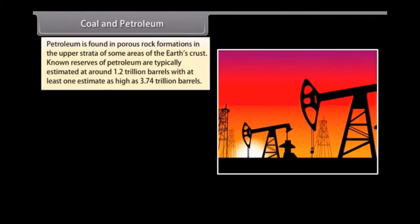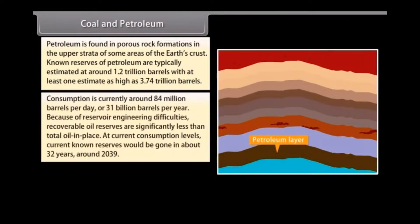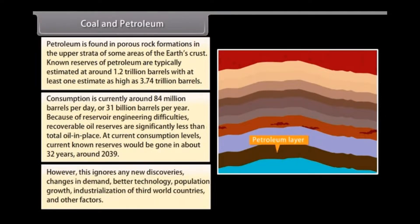Petroleum is found in porous rock formations in the upper strata of some areas of the earth's crust. Known reserves of petroleum are typically estimated at around 1.2 trillion barrels, with at least one estimate as high as 3.74 trillion barrels. Consumption is currently around 84 million barrels per day or 31 billion barrels per year. Because of reservoir engineering difficulties, recoverable oil reserves are significantly less than total oil in place. At current consumption levels, current known reserves would be gone in about 32 years, around 2039 — though this ignores new discoveries, changes in demand, better technology, population growth, and industrialization of developing countries.